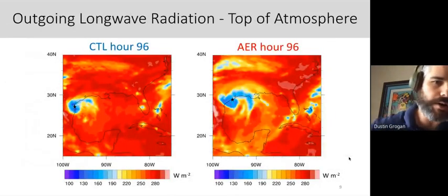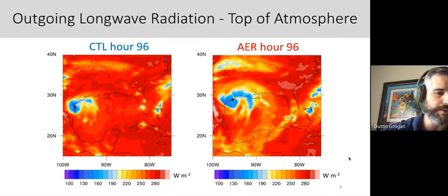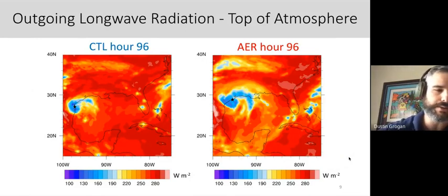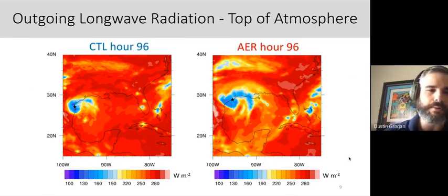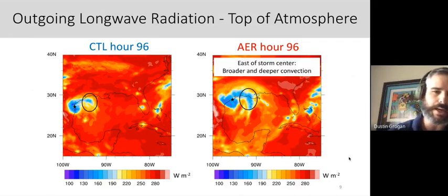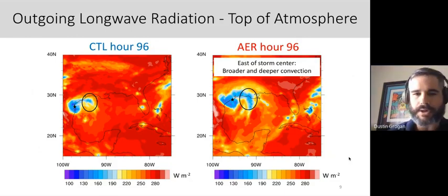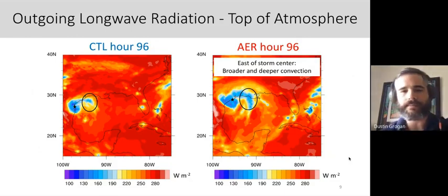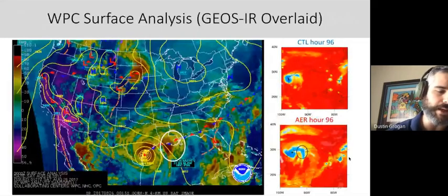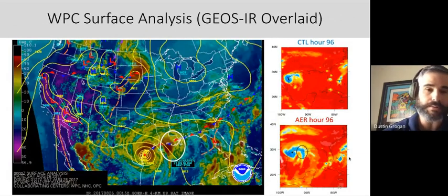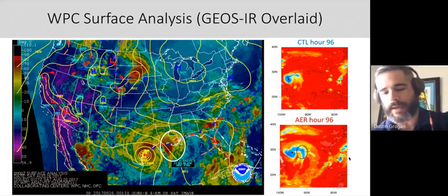We also quickly looked at the OLR to get a sense of high cloud tops and convection. The two cases as they made landfall show high cloud tops around the storm center near the wall, and a convective branch on the eastern side. For the aerosol case, the cloud tops appear higher on the eastern side, indicating broader and potentially deeper convection. Lining that up with GOES IR from WPC, the brightness temperatures do show cold cloud tops on the eastern side of the storm — qualitatively lining up more with the aerosol case.